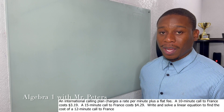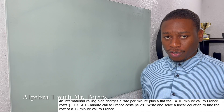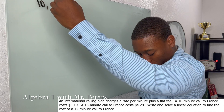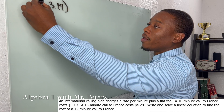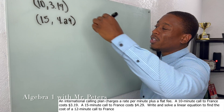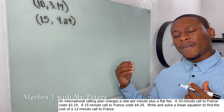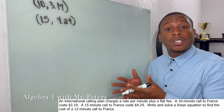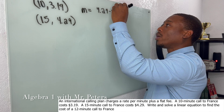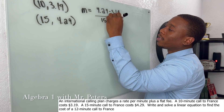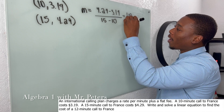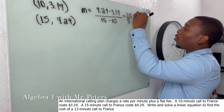Problem number two — they're giving us a lot of information for this international call. We know that a 10-minute call to France costs $3.19, and a 15-minute call costs $4.29. The first thing we need to do is take these two ordered pairs and figure out the rate of change, aka slope. We set up the formula: (4.29 − 3.19) / (15 − 10).